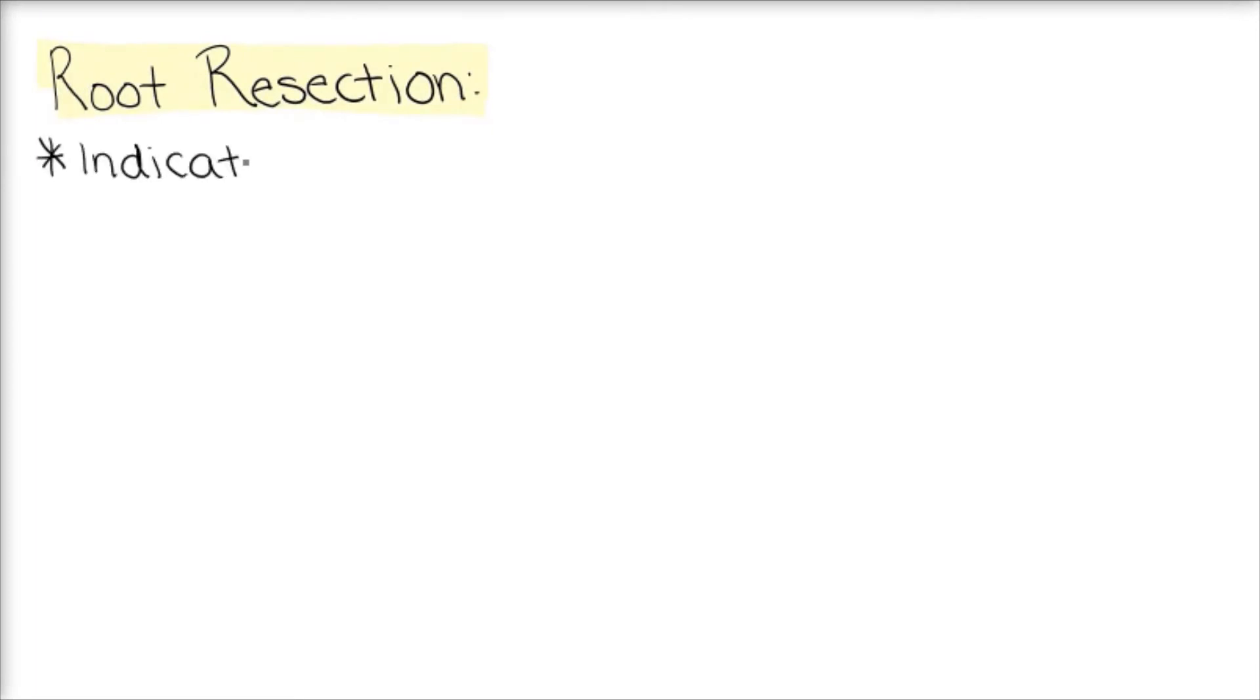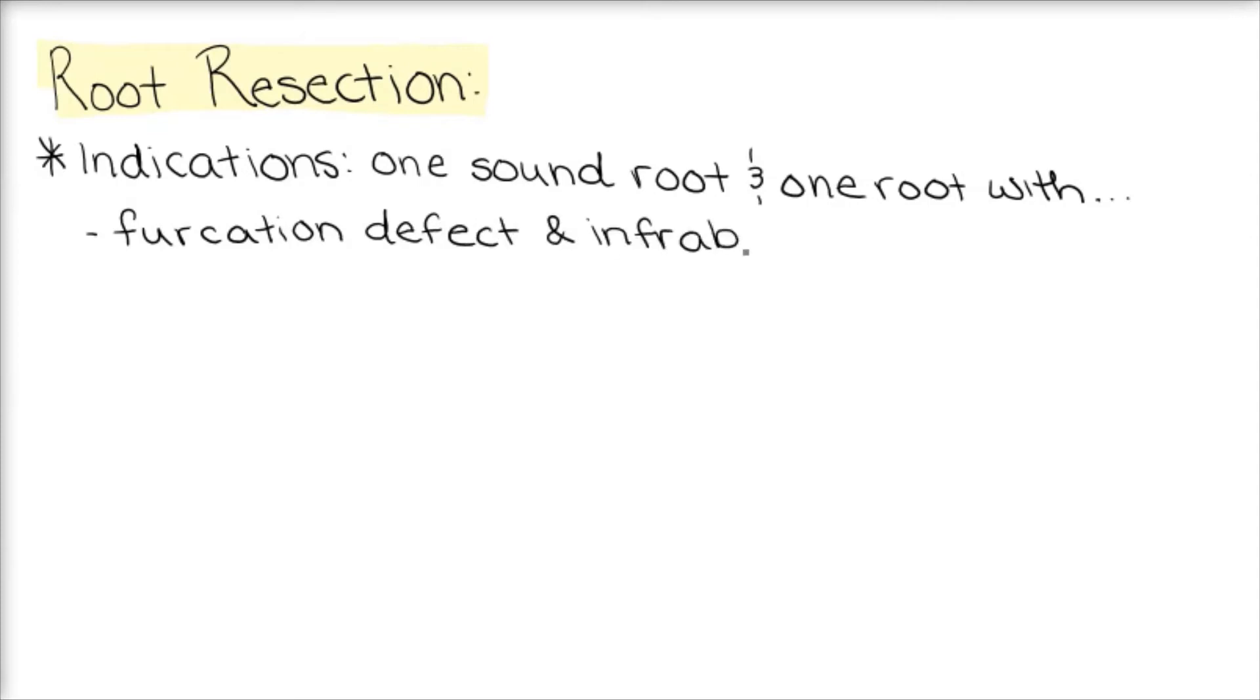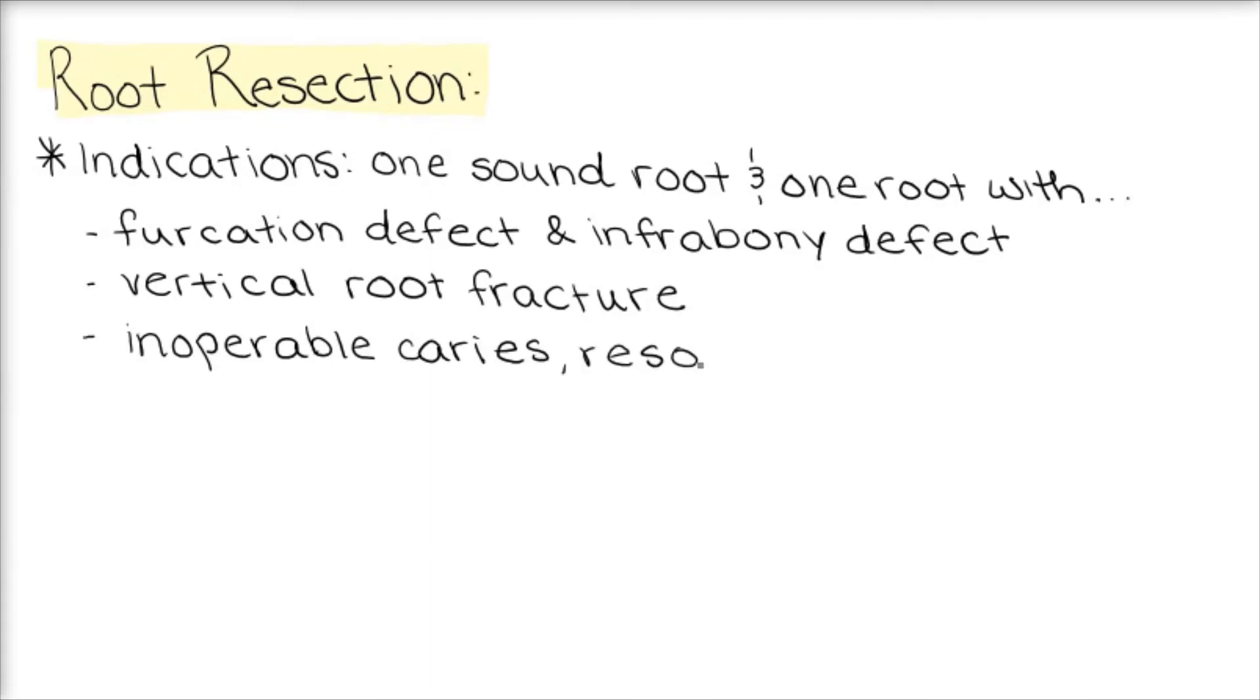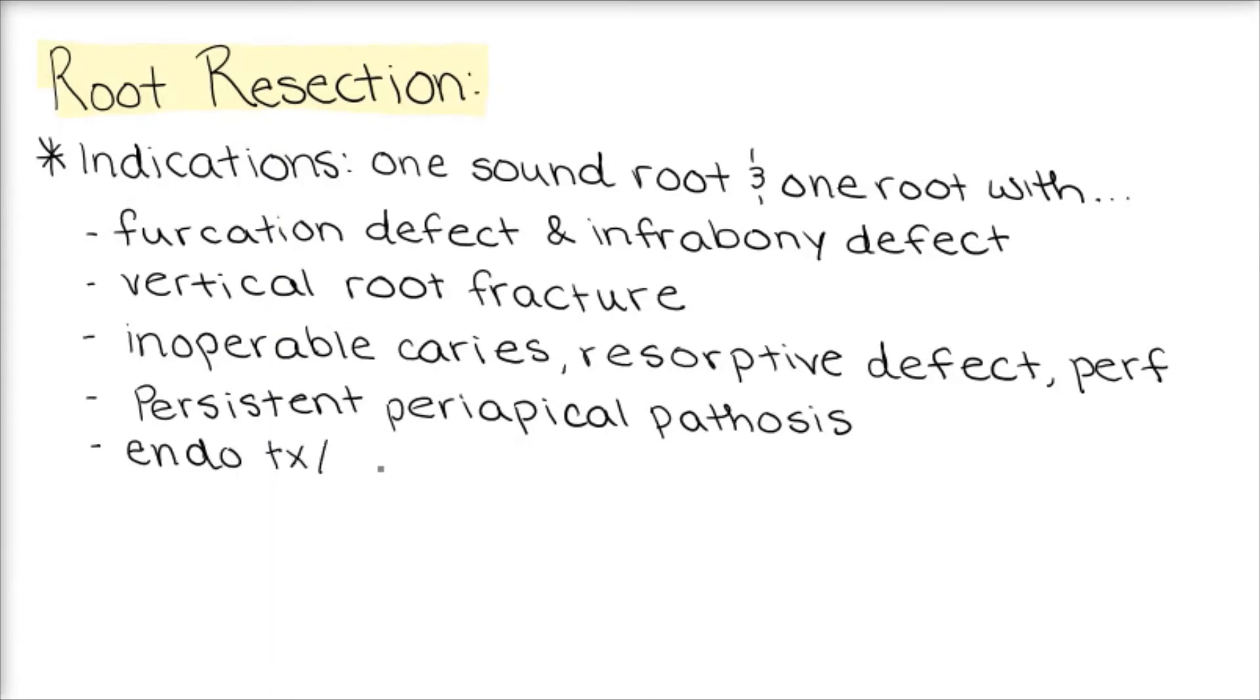Next, we'll look at root resection, which is also known as root amputation. It is indicated when we have a multi-rooted tooth, where at least one of these roots is sound, and one root has either a furcation defect and a severe infrabony defect, or something like a vertical root fracture, which is confined to one root, which can be removed, inoperable caries, resorptive defects, or perforations on that one root. It can also be done in the case of persistent apical pathosis, where non-surgical root canal or periradicular surgery just isn't possible.